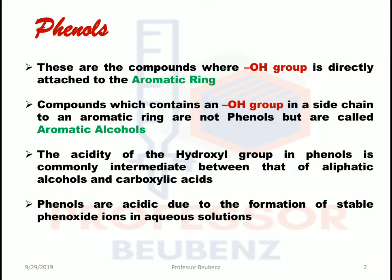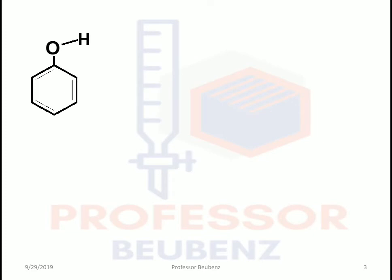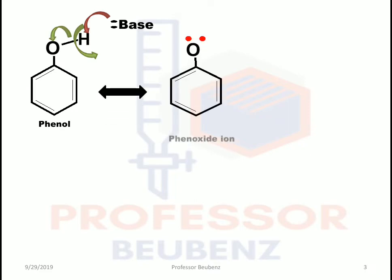Phenols are acidic due to the formation of stable phenoxide ions in aqueous solution. We will now see in detail the resonance effect of this phenoxide ion. A base abstracts the proton from this phenol, and after abstraction, the electrons shared between oxygen and the proton are retained by the electronegative oxygen, forming the phenoxide ion.